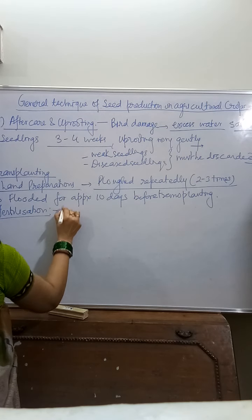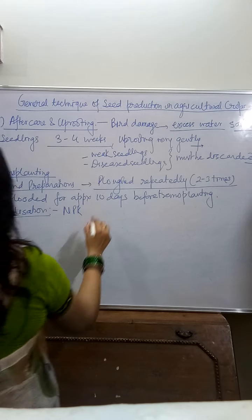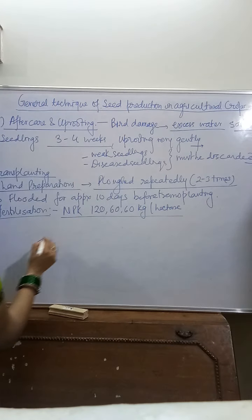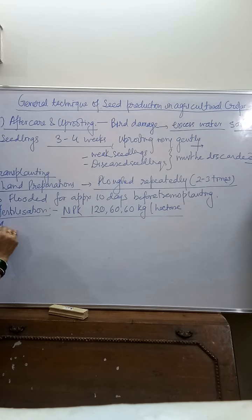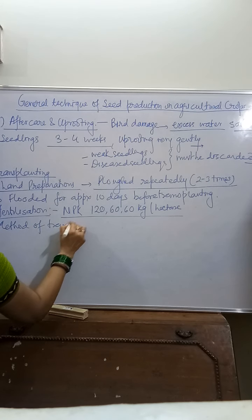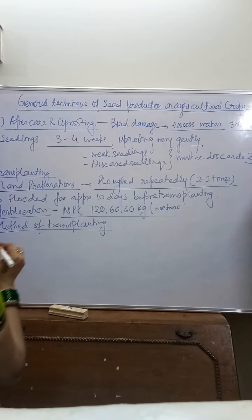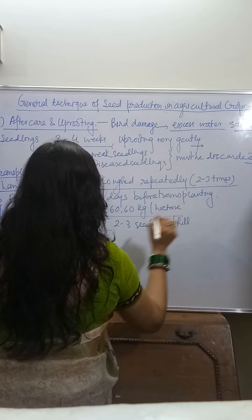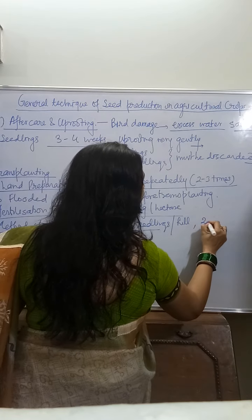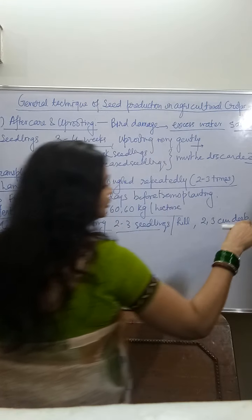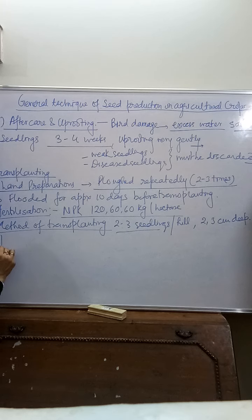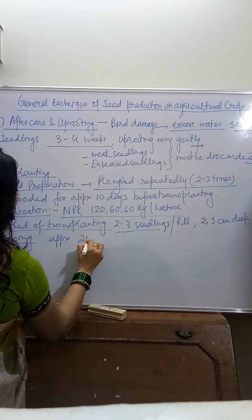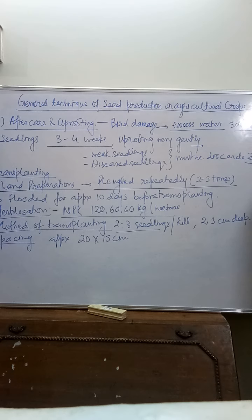NPK means nitrogen, phosphorus, and potassium. Method of transplanting: 2 to 3 seedlings per hill लगाते हैं, 2 to 3 cm deep। Spacing approximately 20 × 15 cm होनी चाहिए।